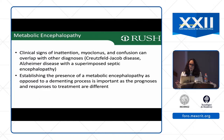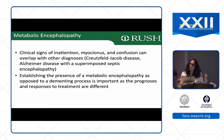Establishing the presence of metabolic encephalopathy as opposed to some form of a dementing process is particularly important. It's really the history that's going to help you determine if this is truly a metabolic encephalopathy or if these patients have an underlying dementing process — because if it's a dementing process with secondary deterioration, they're not going to fare as well as somebody with a metabolic encephalopathy.